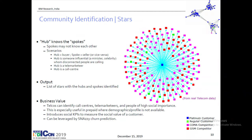For example, the hub could be a buyer while each spoke is a seller, or vice versa. The hub could be somebody very influential or very popular. This could be a celebrity with followers, or it could be a telemarketer who is calling all these people to buy stuff — nobody calls him back, and the people on the spokes are not connected with each other. Even without knowing anything about the person's profile, by looking at these patterns you can guess a lot about what the person is doing.